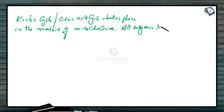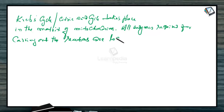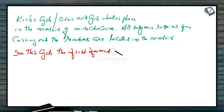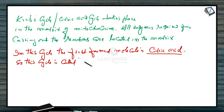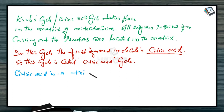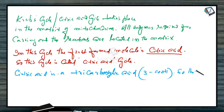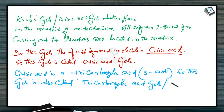Krebs cycle or citric acid cycle takes place in the matrix of mitochondrion. All enzymes required for carrying out the reactions are located in the matrix. In this cycle, the first formed molecule is citric acid, so this cycle is called citric acid cycle. Citric acid is a tricarboxylic acid having three COOH groups, so this cycle is also called tricarboxylic acid cycle or TCA cycle.